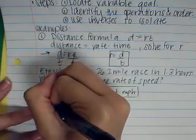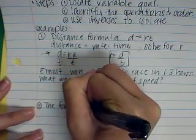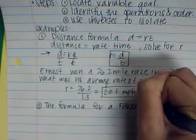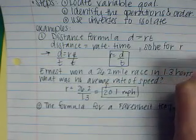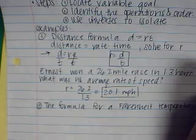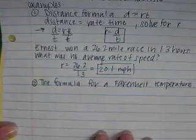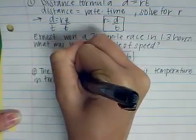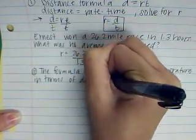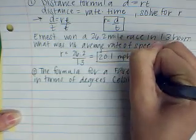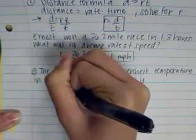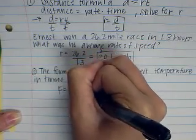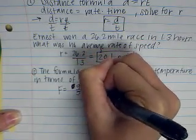Let's look at another one. Number two. The formula for a Fahrenheit temperature in terms of degrees Celsius is F equals nine fifths C plus 32.